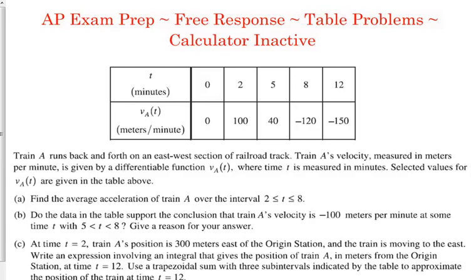Let's look at what we've got going here. We've got a table that has certain times in minutes and velocities. It's V sub A, so it seems like we may have two objects here, and we do. We're talking about a train that runs back and forth on an east-west section of railroad track. Its velocity, measured in meters per minute — you'll need to remember that because they're going to want units — is given by some differentiable function. Time is measured in minutes, and they give us select values.